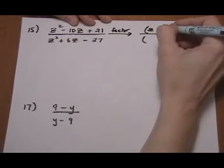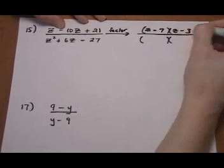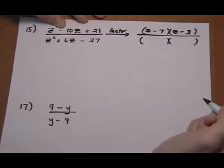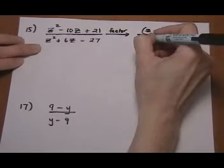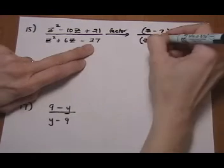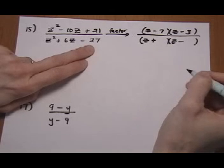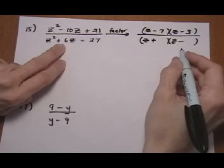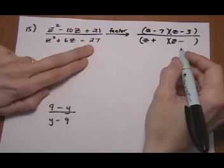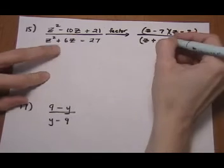And they have to add up to the 10. So we want to use 7 and 3. And they can be negative because the middle has to be minus 10. So z minus 7. Z minus 3. And then the denominator. We have z and z again. Opposite signs this time. Plus and minus. And that means that they're going to cancel out and have a difference of positive 6.